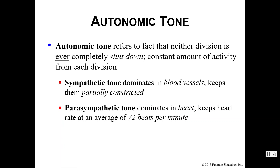Autonomic tone refers to the fact that neither division is ever completely turned off — it's not a flip of a switch where sympathetic is on or parasympathetic is on. It's a little bit of a lot of things happening at the same time. Your sympathetic tone dominates the blood vessels, meaning your blood vessels are partially constricted at all times, which helps maintain homeostasis with regards to blood pressure. Parasympathetic tone, however, dominates the heart itself, keeping your average heart rate at approximately 72 beats per minute.